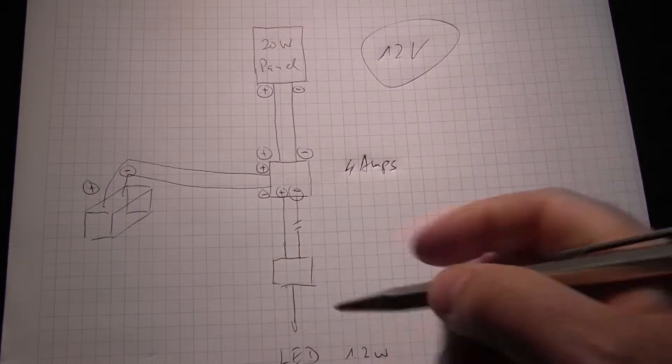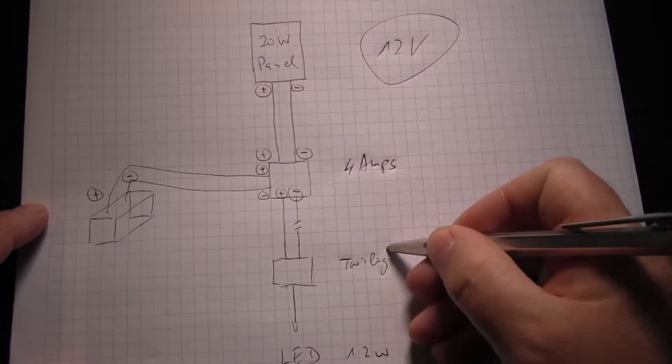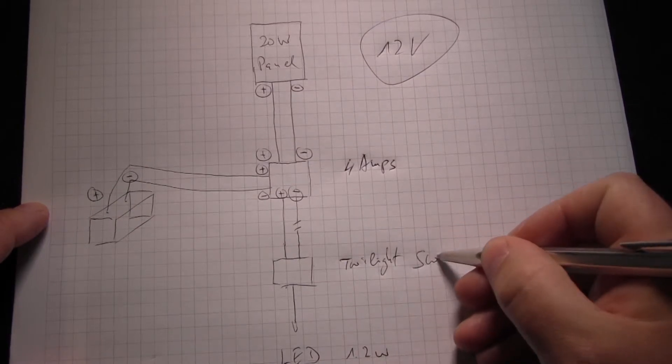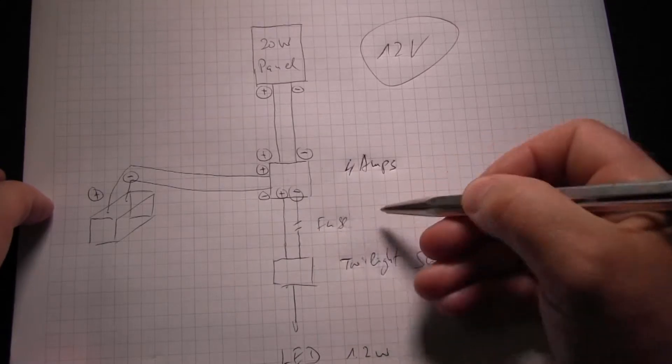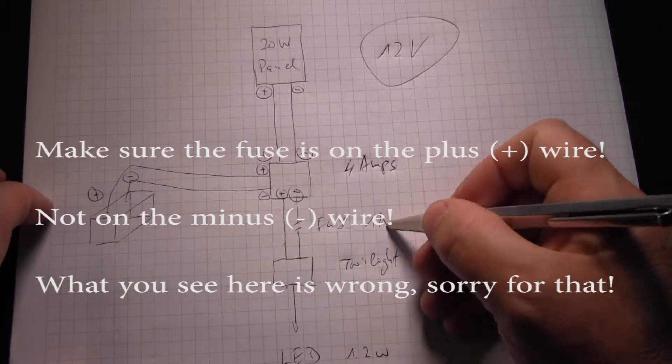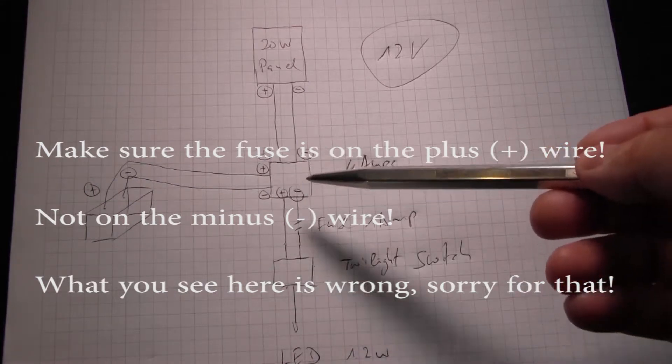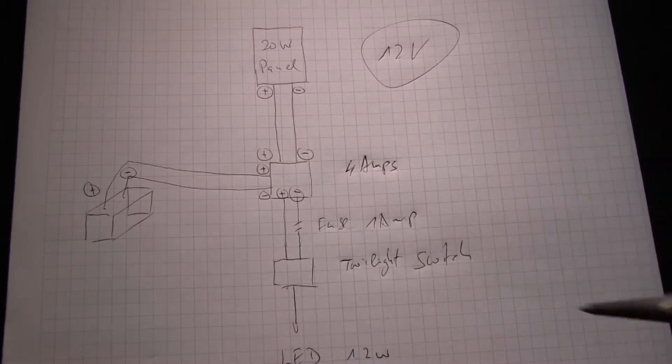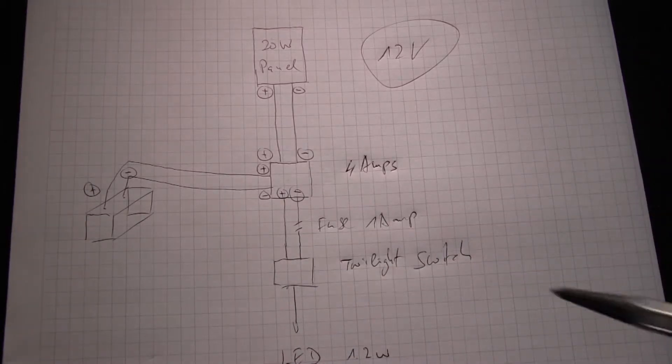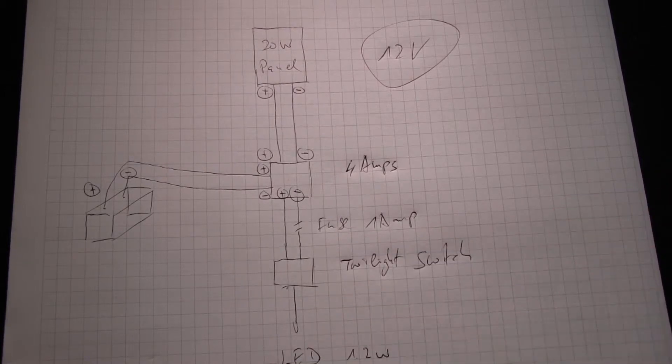Then to protect the twilight switch, there is a fuse here and it's a one amp fuse which makes sure that if something goes wrong somewhere, the twilight switch does not break. The twilight switch that I bought will automatically protect the LED.